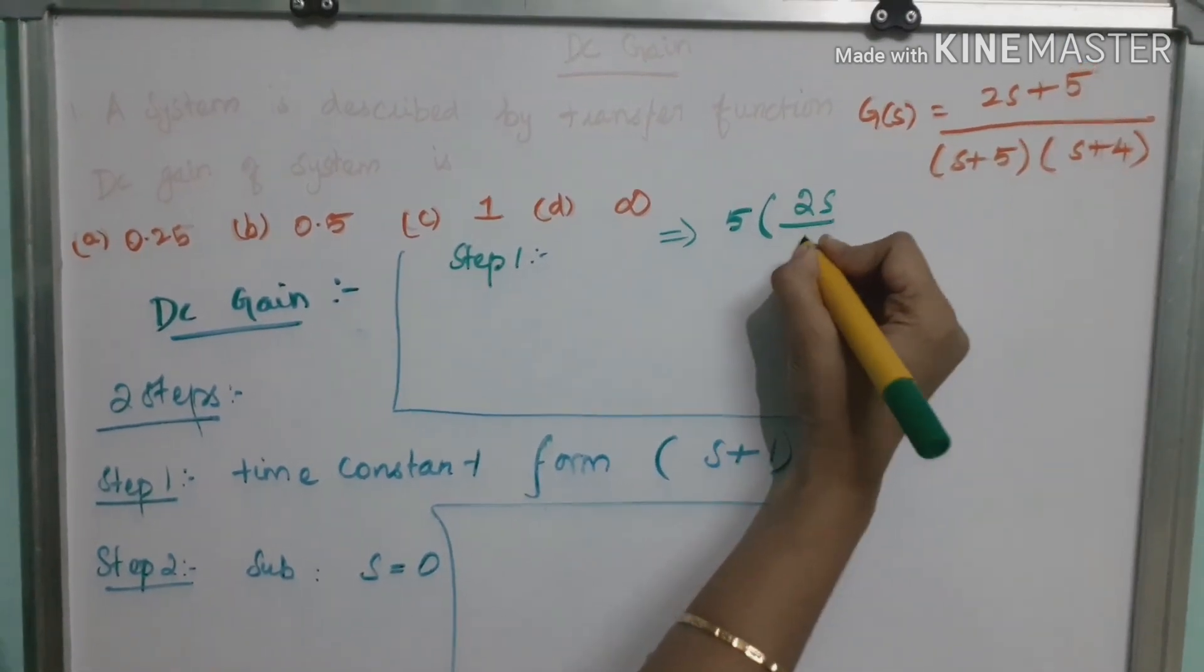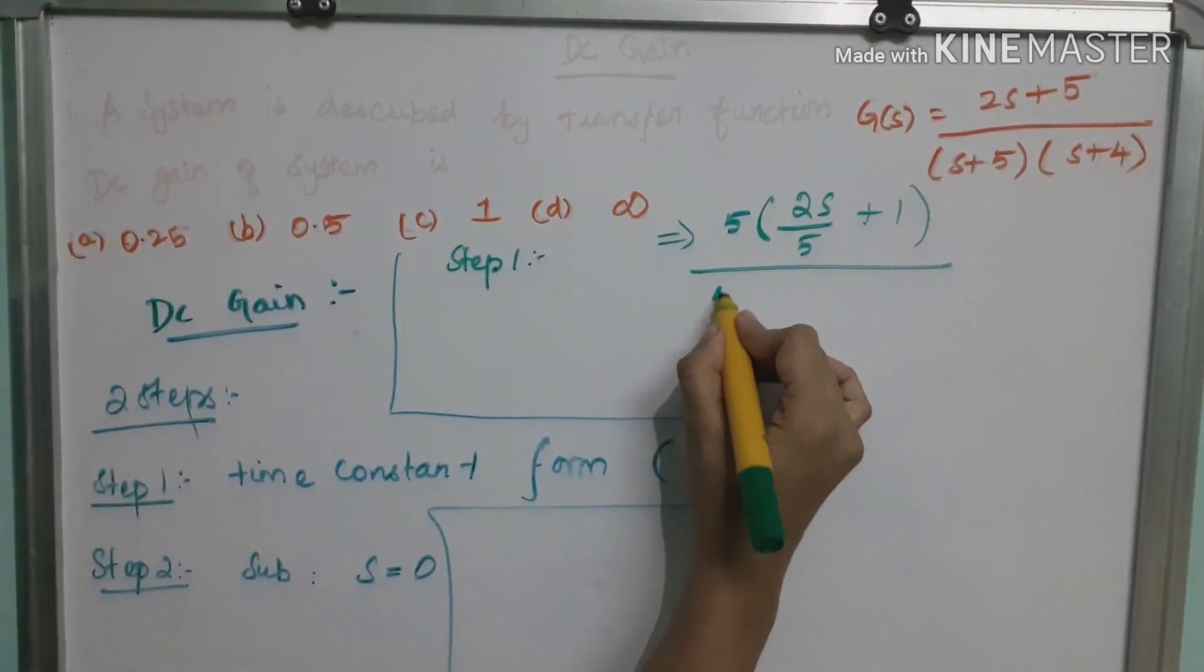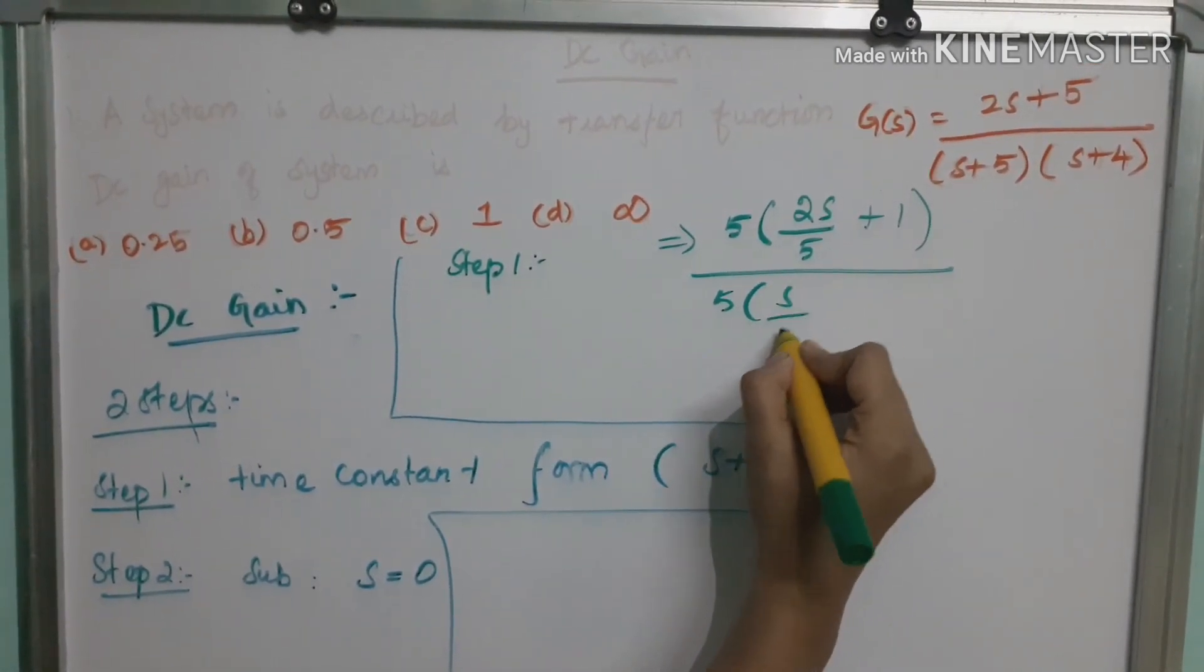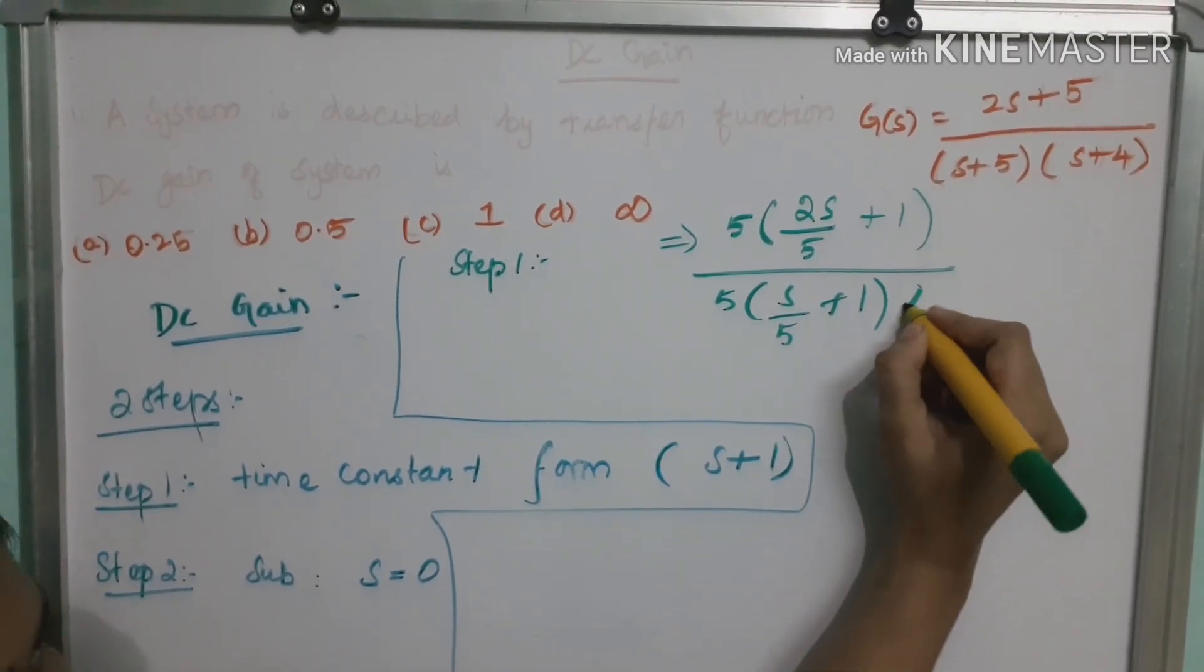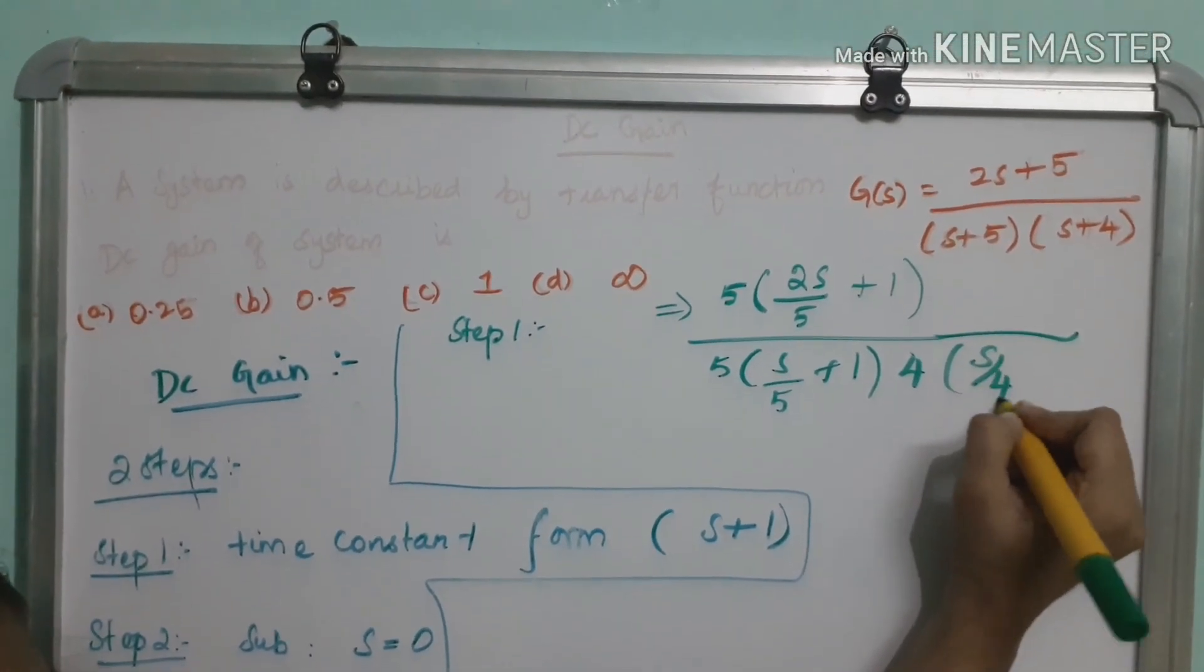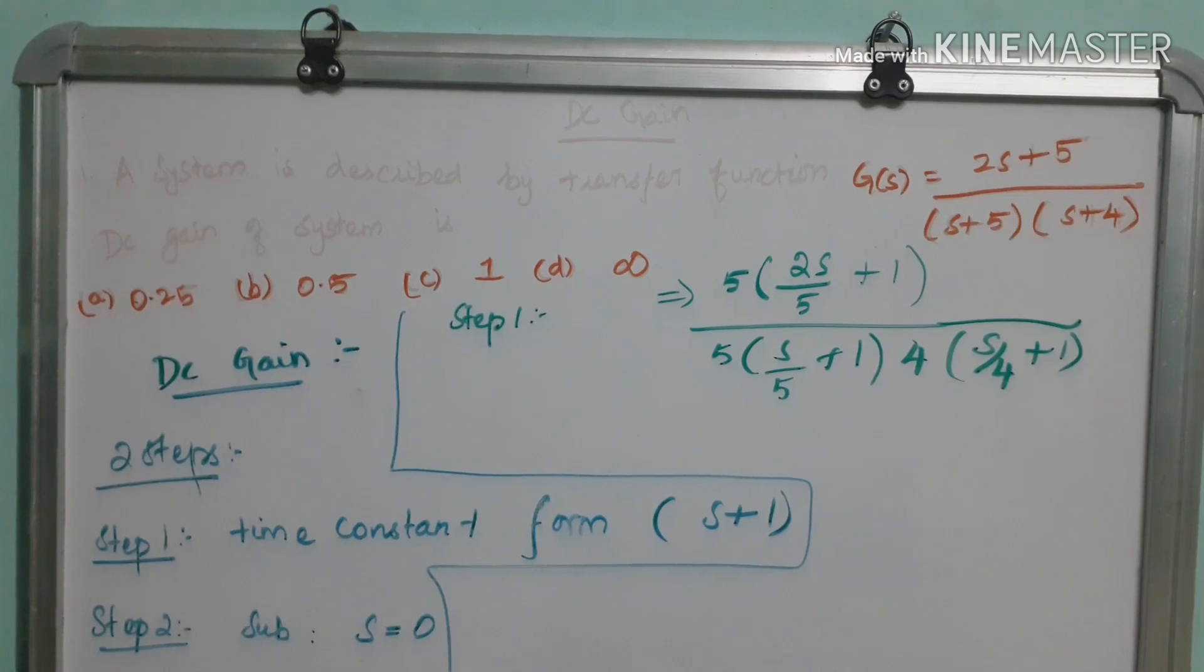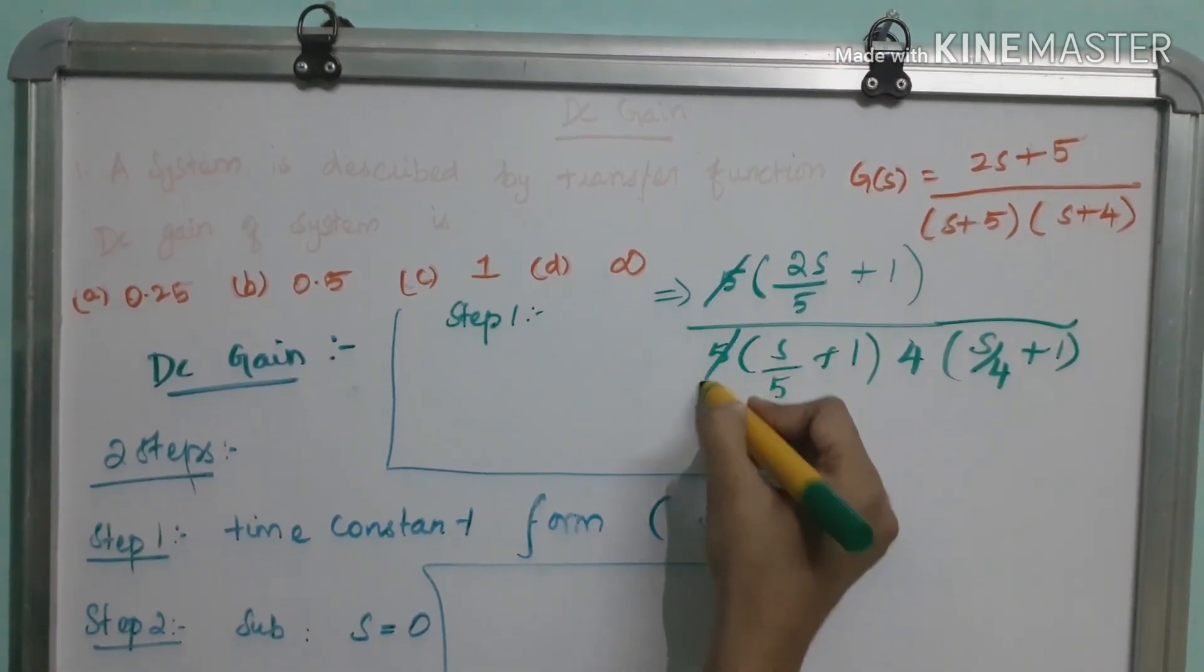Take 5 common outside. So, 2s by 5 plus 1 divided by 5, s by 5 plus 1, into taking 4 common outside, s by 4 plus 1. This is our time constant form. We can strike out this 5 and 5.